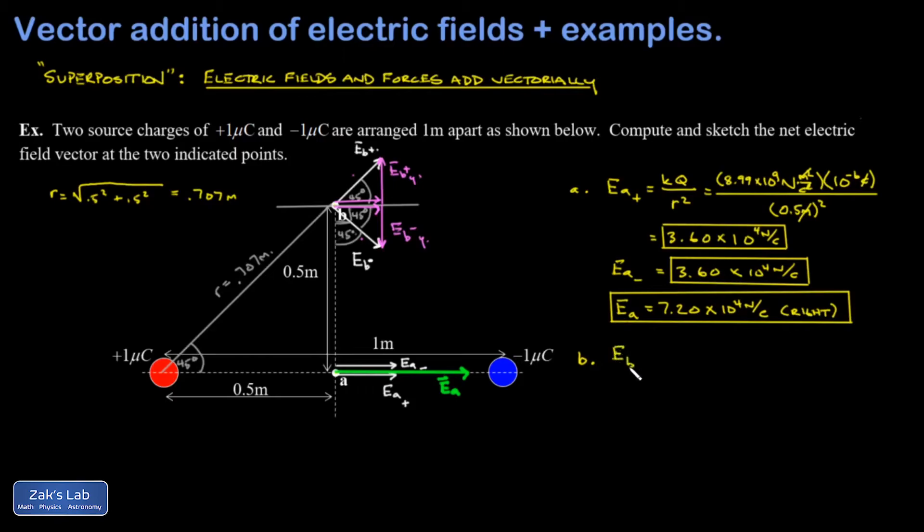I have E_B plus magnitude is equal to KQ over R squared. And that's 8.99 times 10 to the 9th times the size of the charge, 10 to the negative 6 coulombs, divided by distance from the source charge squared, so that's 0.707 squared.